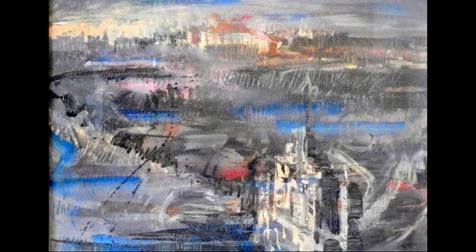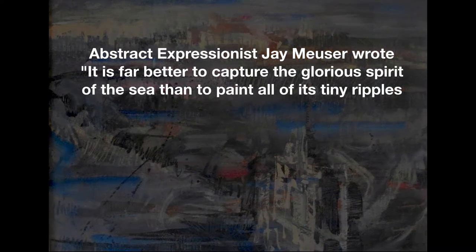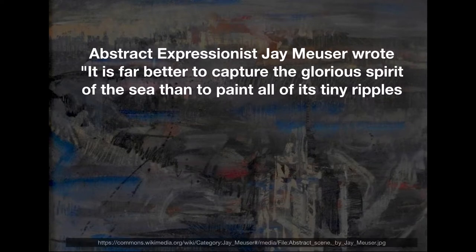Wikipedia tells us that abstract art uses a visual language of shape, form, colour and line to create a composition which may exist with a degree of independence from visual references in the world. There's a tendency towards generalisation — the artist wants us to see the river-ness, the bridge-ness and the city-ness. It's the idea of a busy city, rather like the idea of a kangaroo. Abstract artist Jay Musa wrote: 'It's far better to capture the glorious spirit of the sea, rather than to paint all of its tiny ripples.' We're generalising when we abstract.